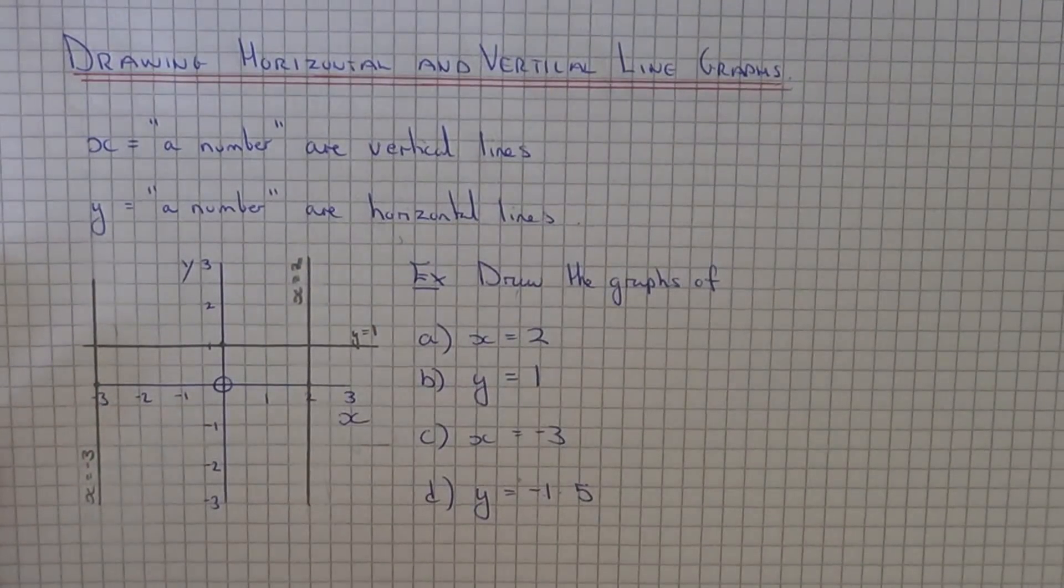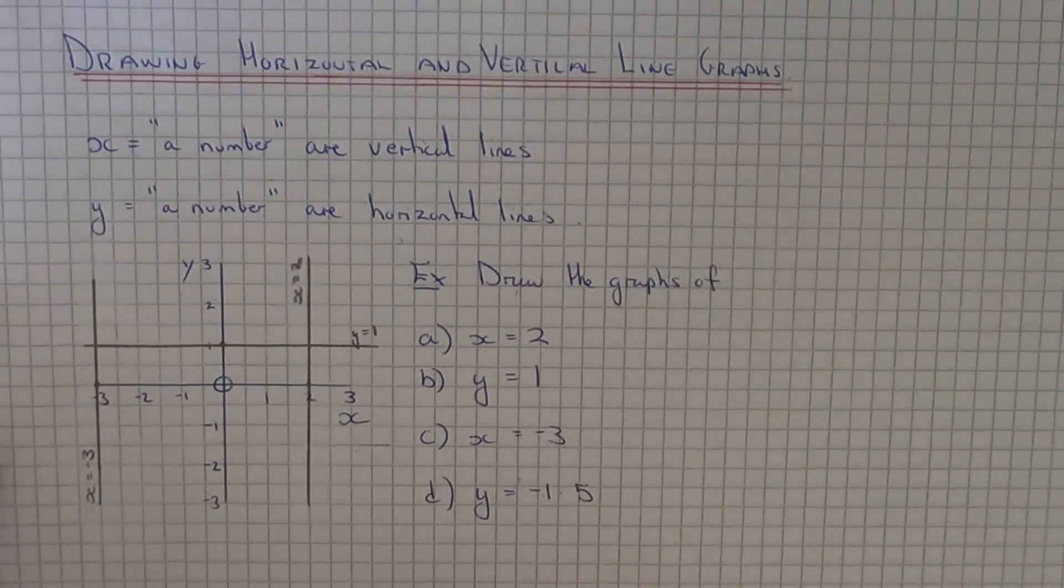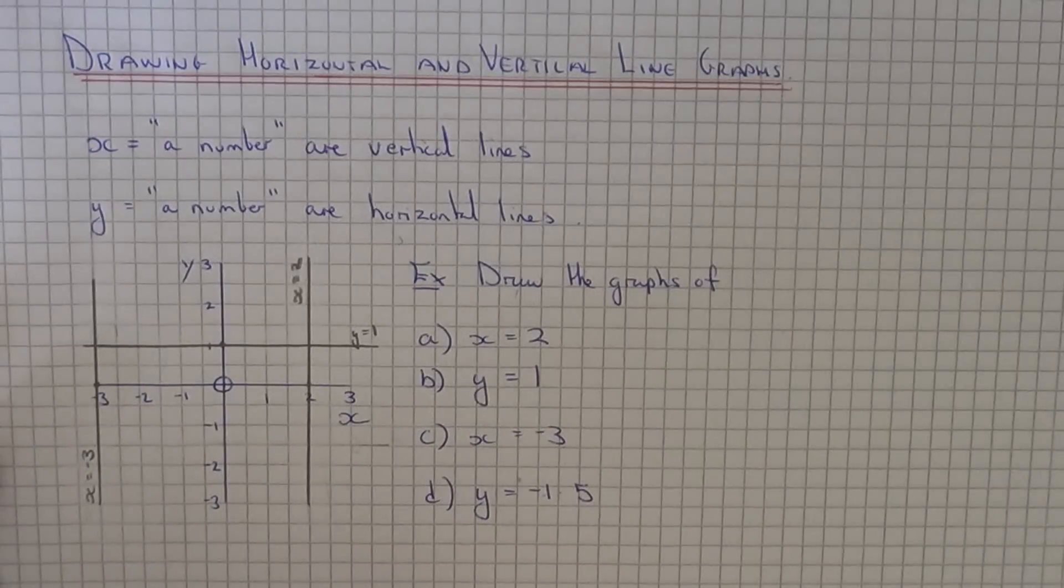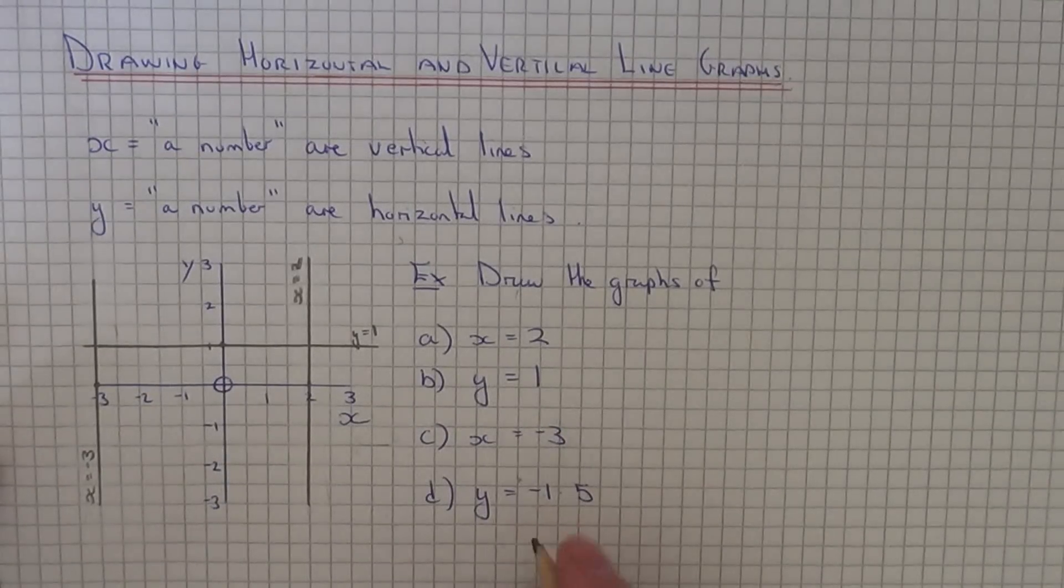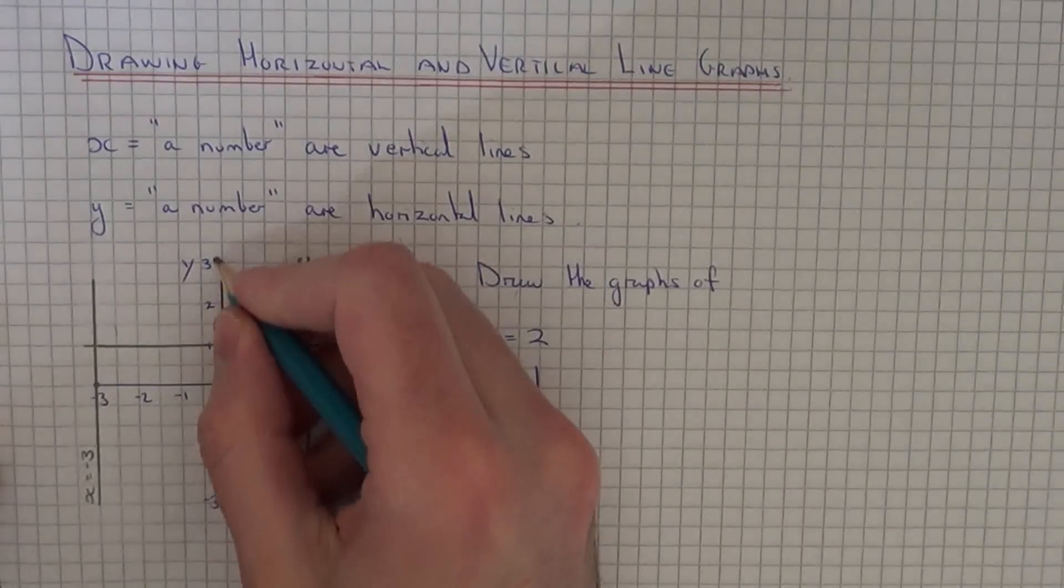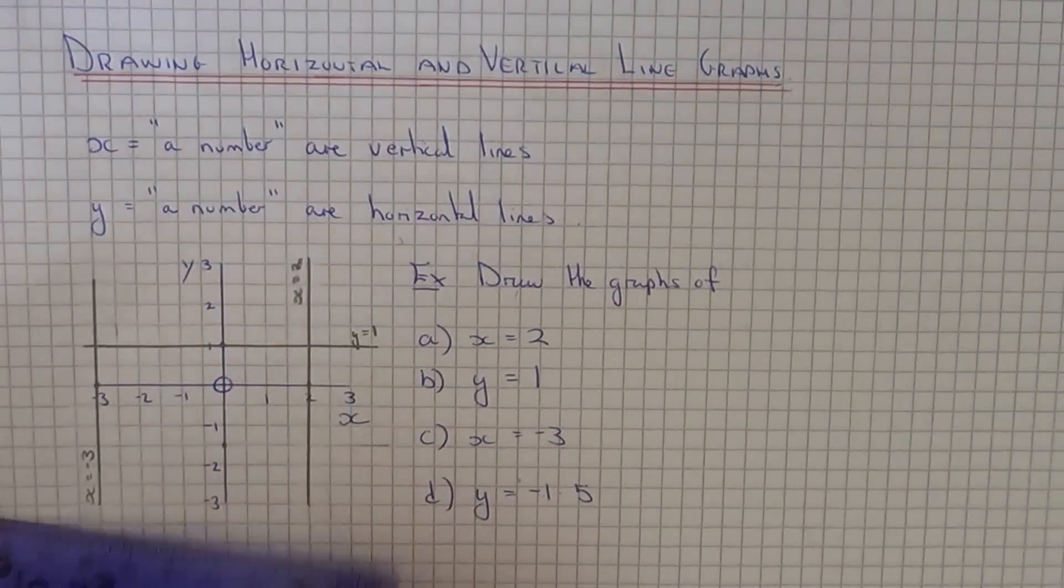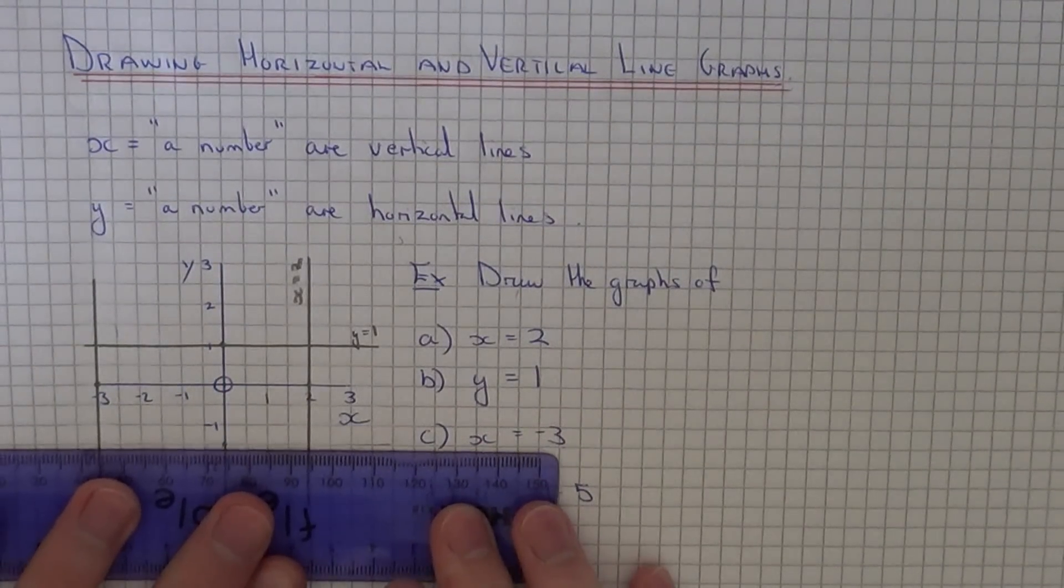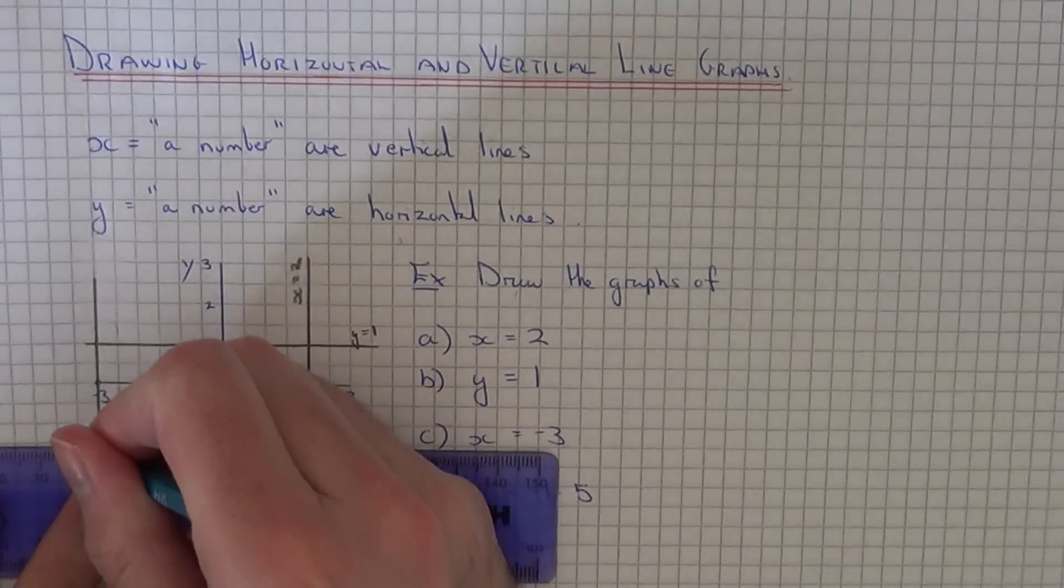And our final example, Part D, we've got to plot the line y equals minus 1.5. So this time look for the minus 1.5 on the y-axis which is here. And this one will be a horizontal line.